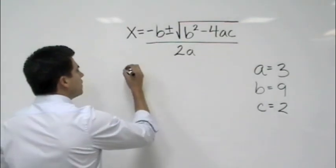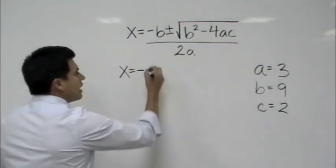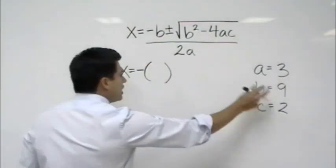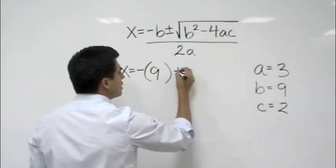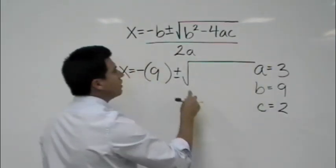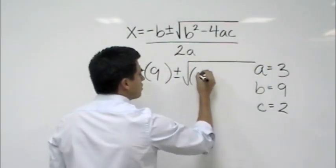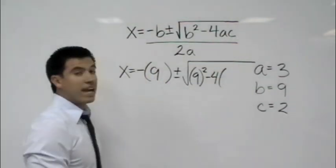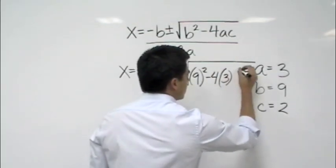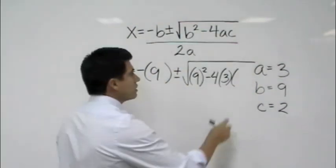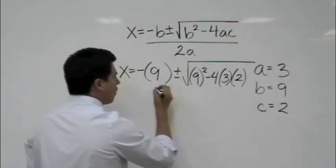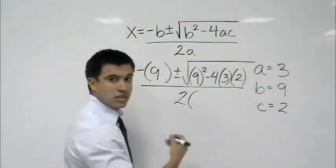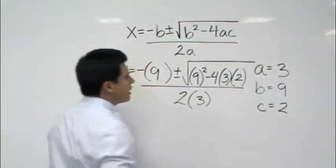Plug that in. So here you would say x equals negative, and you put parentheses in here, and you want to go ahead and plug in what your b is. Your b is 9 plus or minus the square root of b squared, which would be 9 squared minus 4 times a, which is 3, times your c, which is 2, all over 2a, which is 2 times 3. Okay, good.